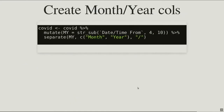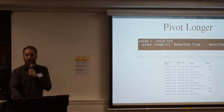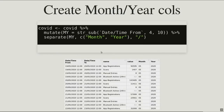The next step is to create a month and year field. We've got date strings, and we want a month-year column on every row for summarizing. We do this with mutate() — creating a new variable 'my' for month-year by taking a substring from the date field that captures just month and year. Then we separate that into two columns by splitting on the slash character, giving us separate month and year columns.